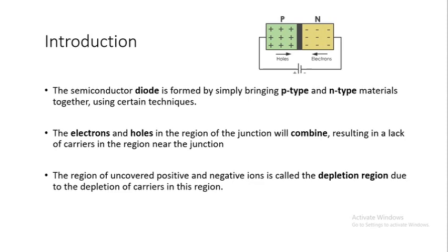If the base material is silicon then we can say that the device is made with silicon material, or you can simply say it's a silicon diode. The semiconductor diode is formed by simply bringing p-type and n-type materials together using certain techniques. The electrons and holes in the region of junction will recombine, resulting in the lack of carriers in the region near the junction. When you connect p-type material to n-type material there will be a junction, and at the place of junction we will have a depletion region.